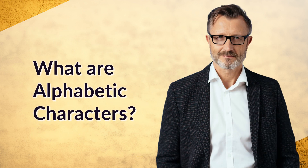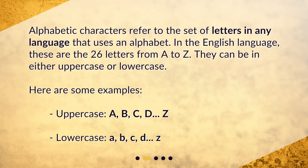What are alphabetic characters? Alphabetic characters refer to the set of letters in any language that uses an alphabet. In the English language, these are the 26 letters from A to Z. They can be in either uppercase or lowercase. Here are some examples. Uppercase: A, B, C, D, Z. Lowercase: a, b, c, d, z.